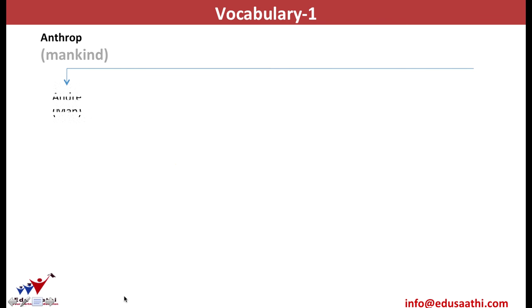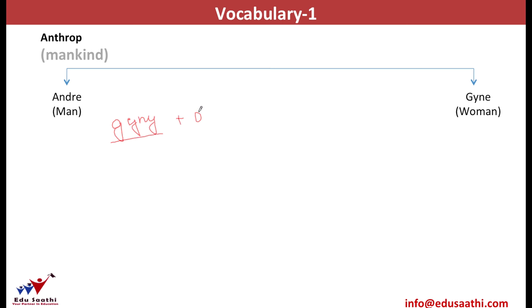In mankind live men and women. The word root for men is 'andri' and the word root for women is 'gyni.' Thus, any word that has andri has some relation to men, and a word that has gyni has some relation to women. We all are aware of doctors known as gynecologists — these are the doctors who treat women for their problems. We can break the word gynecology and find that it is made of 'gyne,' which means a woman, and 'ology,' which is the study. Since it's being used for the doctor, we end it in -ist. Thus, a doctor who studies women's problems is known as a gynecologist.